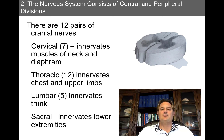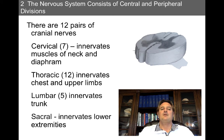When we look at the spinal cord, we have four divisions. The top is the cervical, and the very bottom one is sacral. In between, we have the thoracic and lumbar divisions. We have seven segments for the cervical, which innervates the muscles of the neck and diaphragm. The thoracic has 12, which innervate the chest and upper limbs. The lumbar has five, which innervate the trunk. And finally, the sacral innervates the lower extremities.